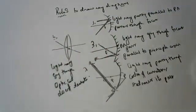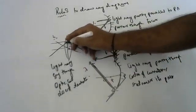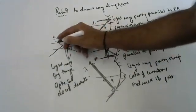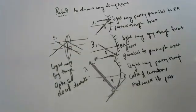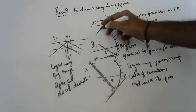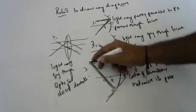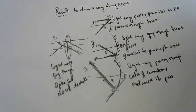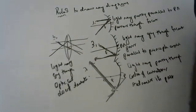These are the four rules to draw ray diagrams. Don't forget these rules. If it is coming parallel, it goes through focus. If it is going through focus, it goes parallel. Light ray going through the optic center does not get deviated. Light ray going through center of curvature does not get deviated. I hope you will understand, and tomorrow I will tell you how to draw the ray diagrams. Thank you.